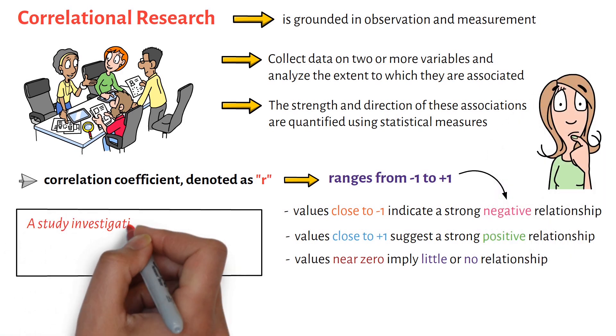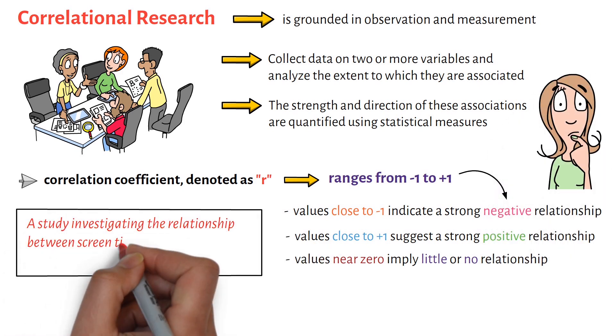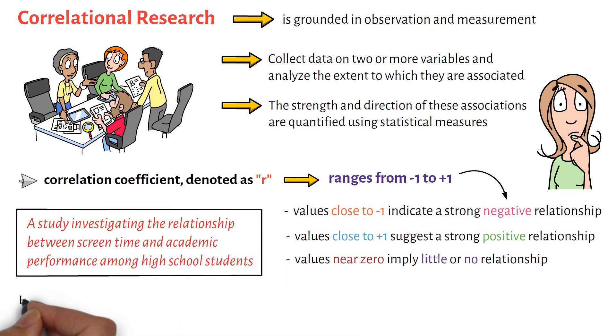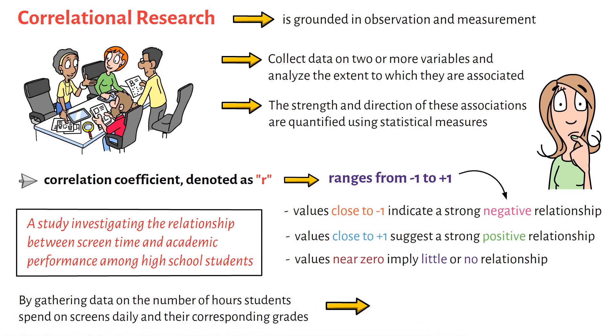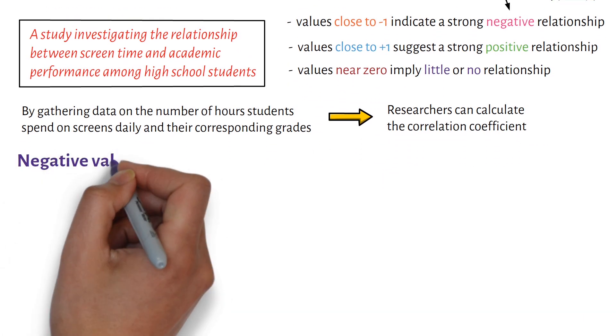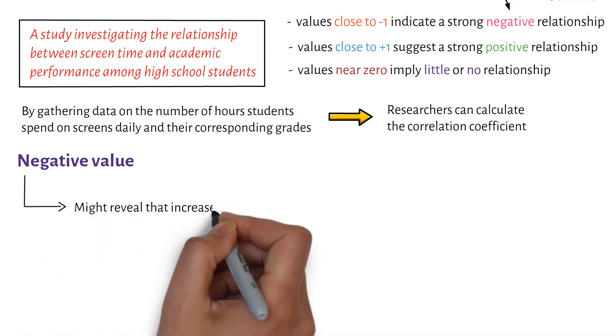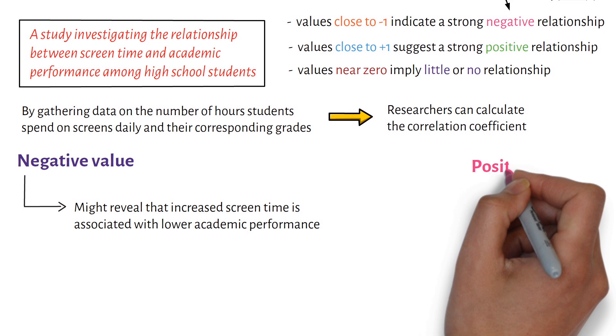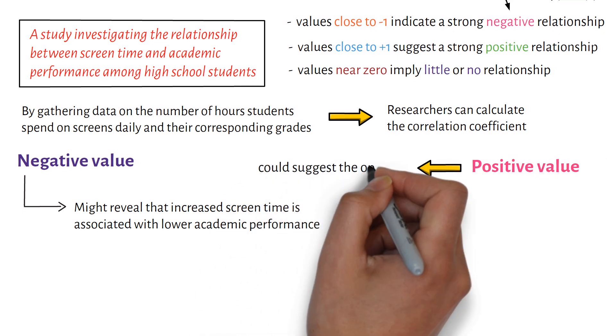Imagine a study investigating the relationship between screen time and academic performance among high school students. By gathering data on the number of hours students spend on screens daily and their corresponding grades, researchers can calculate the correlation coefficient. A negative value might reveal that increased screen time is associated with lower academic performance, while a positive value could suggest the opposite.